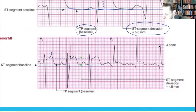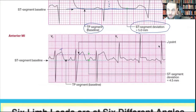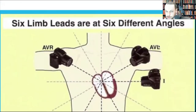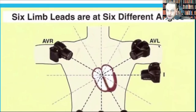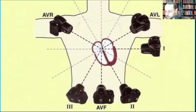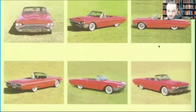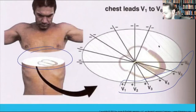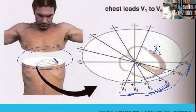Any ST segment elevation is significant, but protocols say greater than or equal to one millimeter. Think of the EKG leads like cameras pointed at your heart from different angles. The precordial leads on your chest envelop the heart: V1 and V2 look at the septal wall, V3 and V4 look at the anterior wall, and V5 and V6 look at the lateral wall.